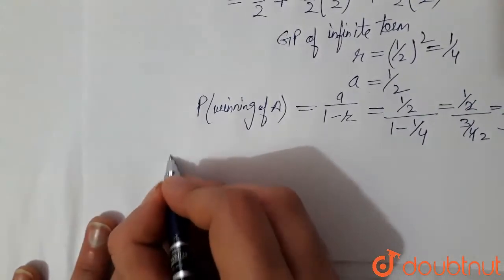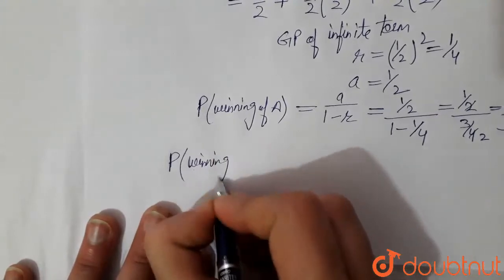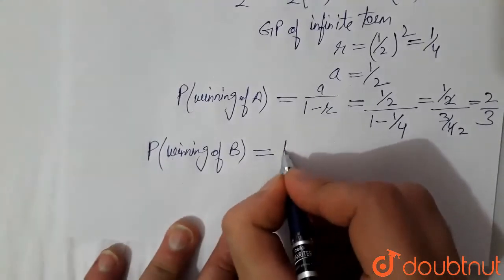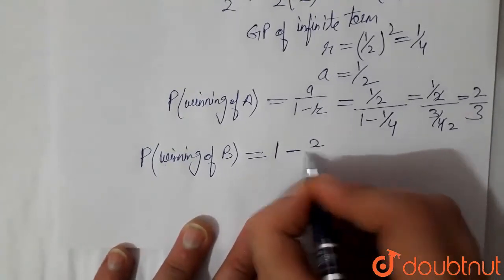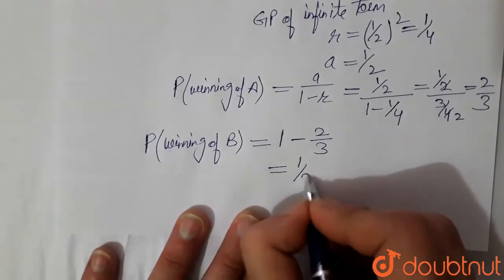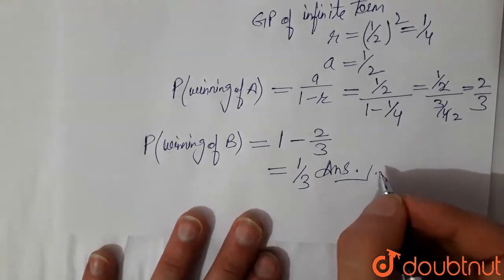But in the question we have been asked probability of winning of B, which is simply total probability, that is 1 minus probability of winning of A, that is 1 minus 2 by 3. This becomes equal to 1 by 3 is the probability of winning of B. This is the final answer. Thank you.